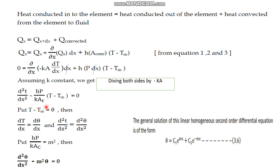This is the simplified equation after substitution and cancellation. We now introduce a new term theta (θ), defined as the temperature difference between the element and the surrounding: θ = T - T∞. Differentiating both sides with respect to x, since T∞ is constant, we get dT/dx = dθ/dx.